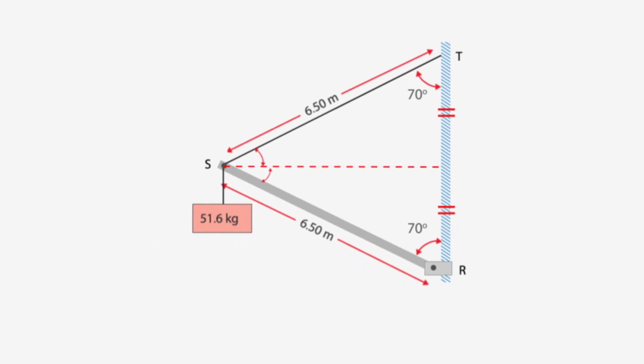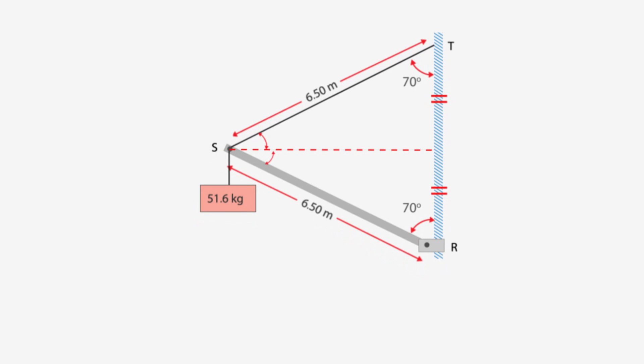Then we have a mass hung on the end. And they tell us we have a uniform mass on the beam of 2.11 kilograms per meter. And that'll allow us to put the weight of the beam acting at the center of the beam, the geometric center of the beam, and acting straight down.